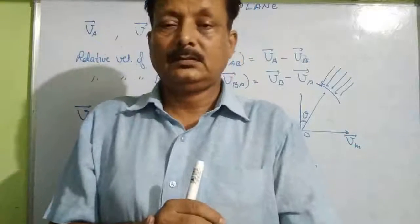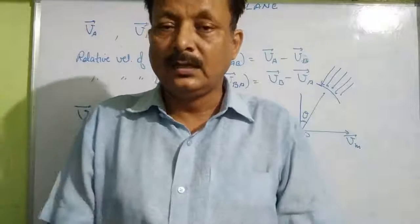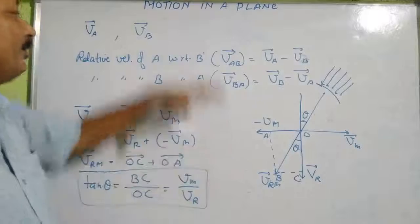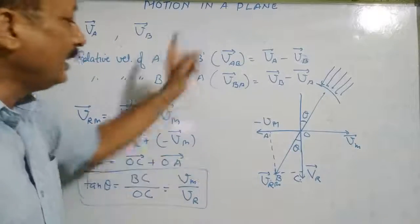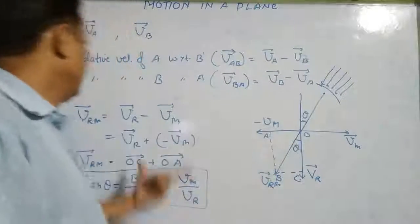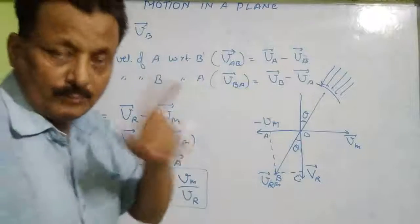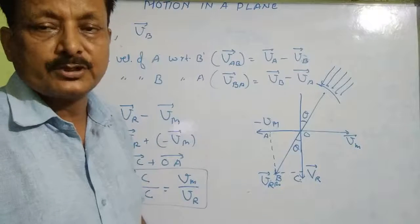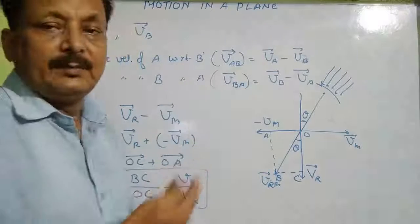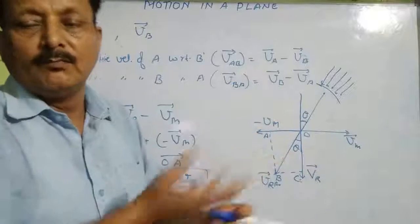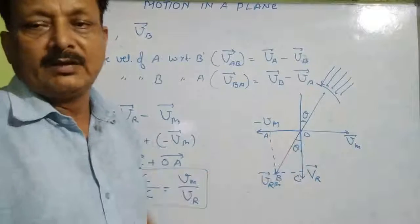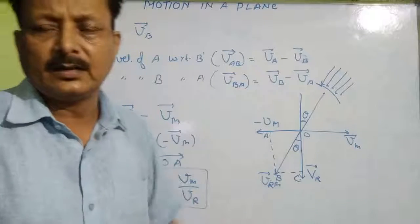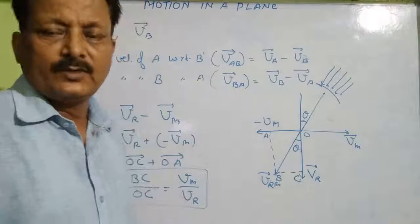So this is your angle from the vertical of the umbrella so that it can protect from the rain. This is how we find relative velocity in a plane. Please copy this down carefully — this is an important question. Similarly, you can find relative velocity for a river-boat problem or any other two-dimensional case using the same method. Please note it down.